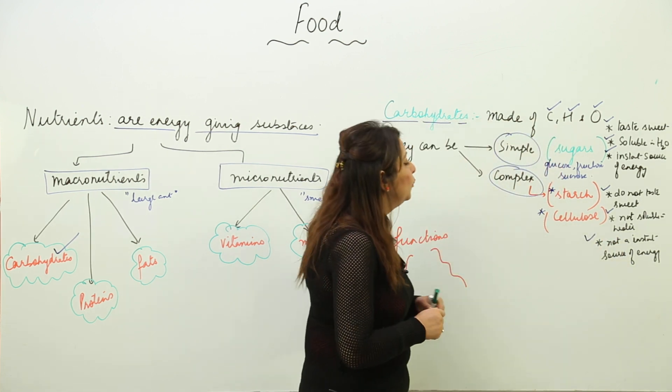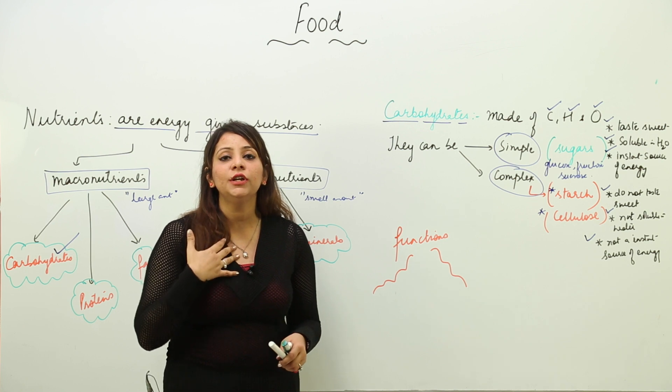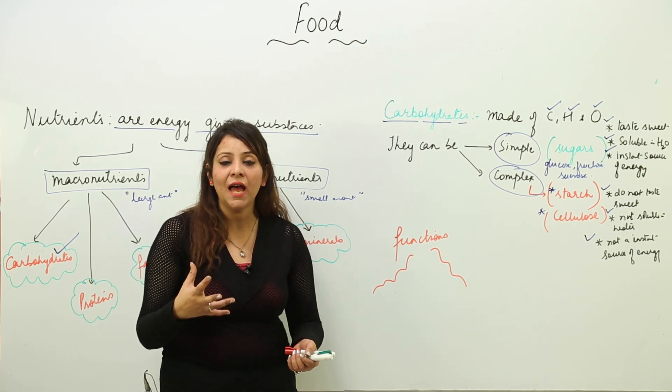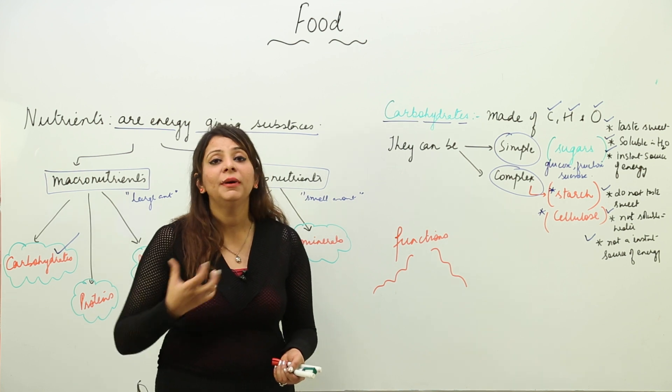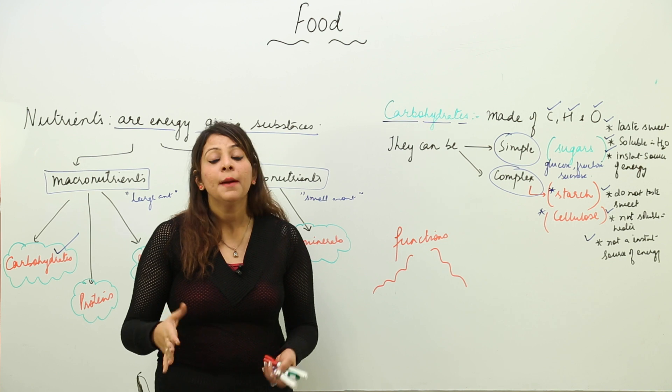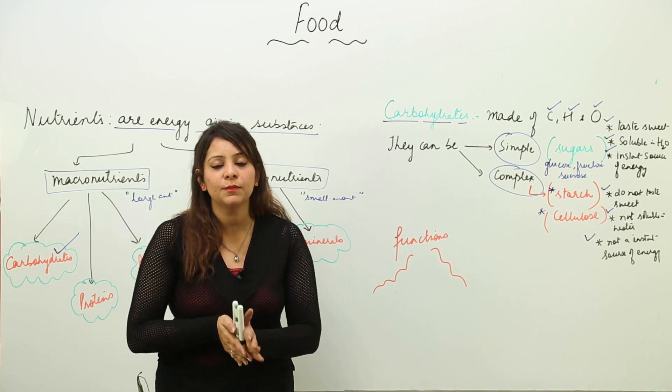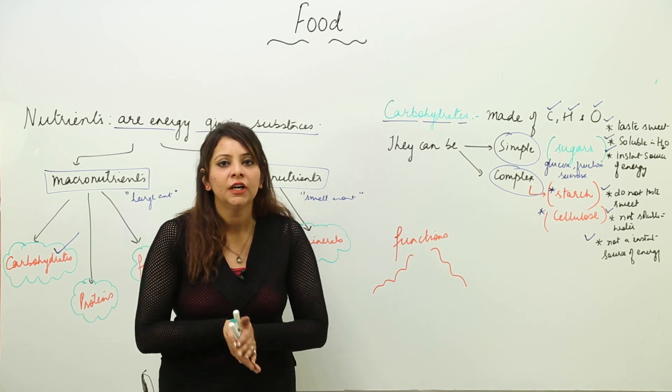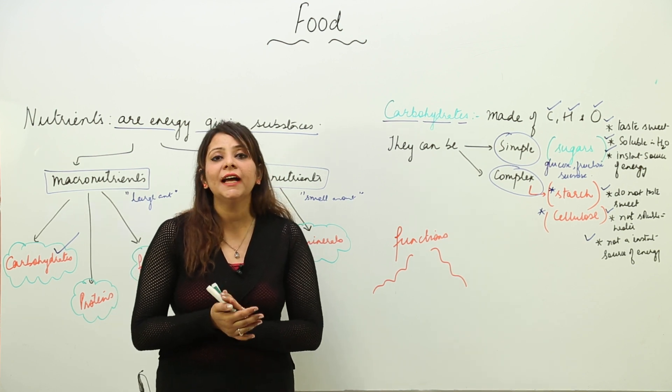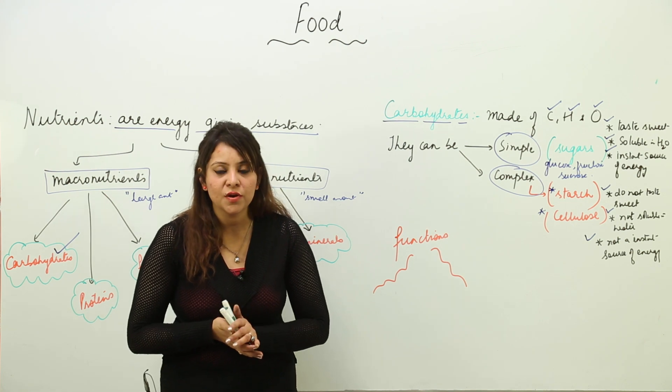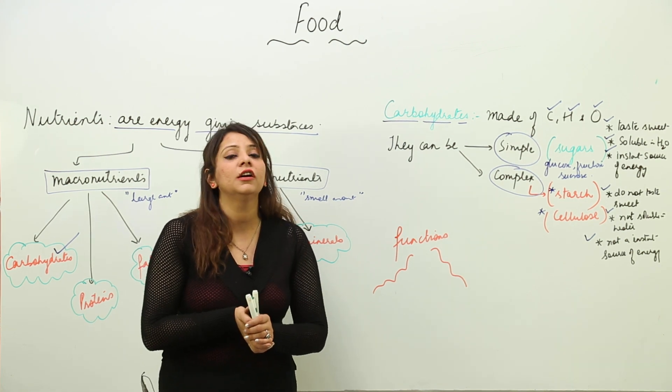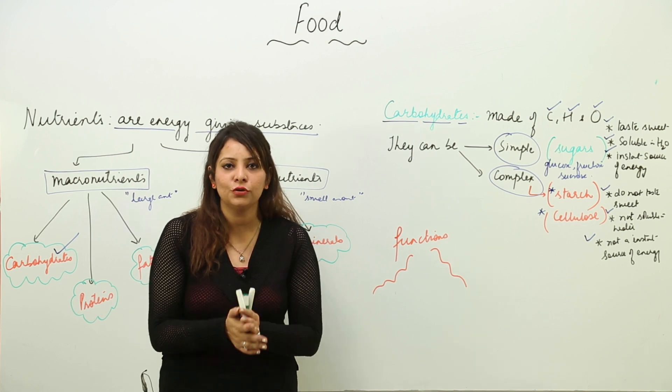Complex carbohydrates provide energy but not an instant source. Cellulose cannot be digested by us. Ruminants like cows and buffaloes have enzymes to digest cellulose, but we don't have any enzyme which can digest cellulose. But still it is very important in diet because roughage is very important. Cellulose is one component of roughage. It prevents constipation and is helpful in proper bowel movement. It is a fibrous content of the diet which is very much required.